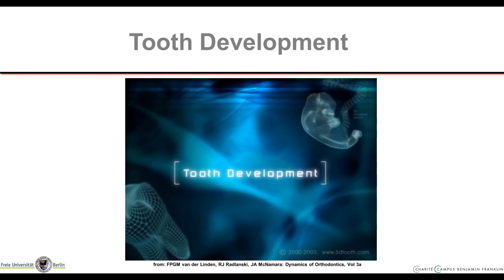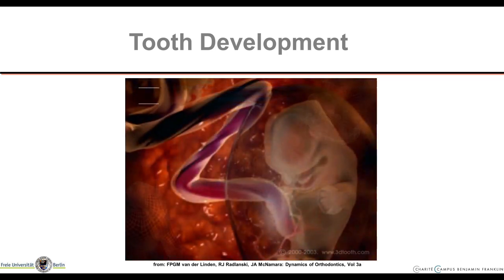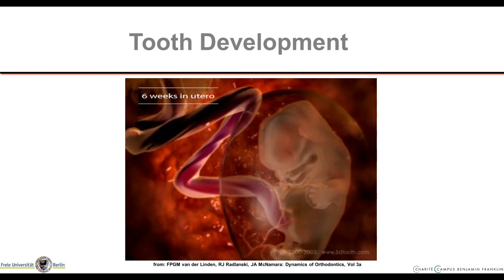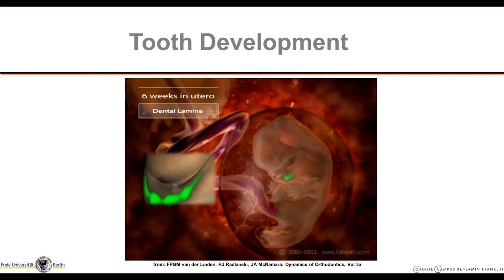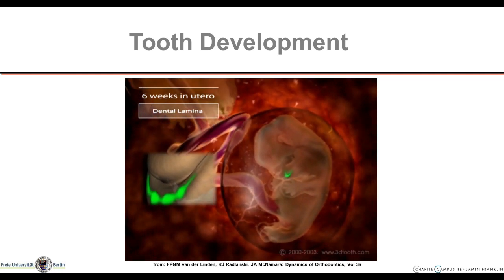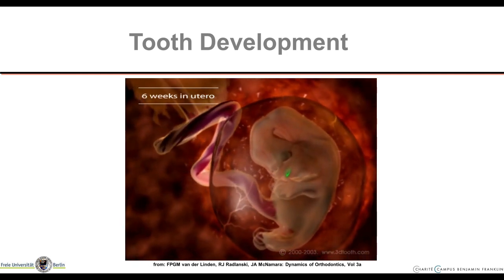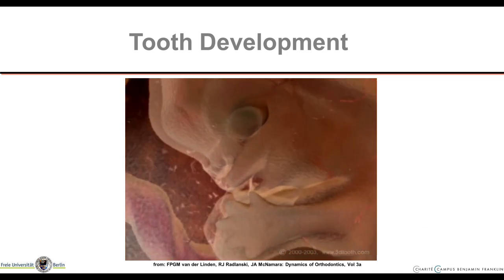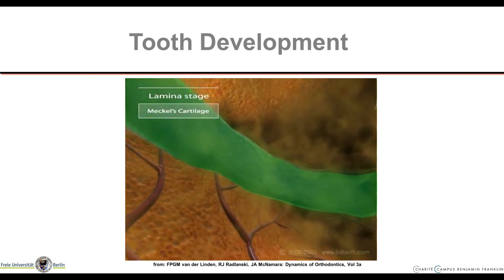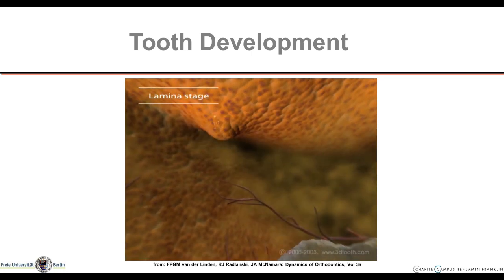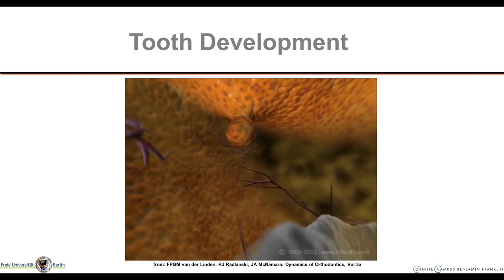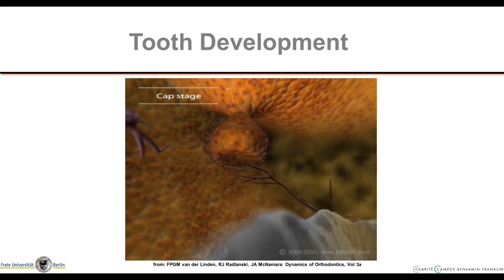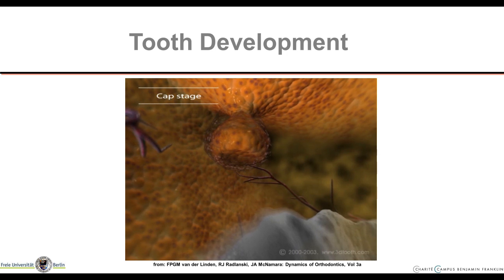Here is a computer animated movie summarizing the most important events of dental development. Here is the embryo, somewhat in motion. We make everything transparent that we are not interested in, and zoom in towards the dental lamina. It is formed already in the sixth week as a thickening of the epithelium of the oral cavity in certain regions. We zoom in further and can now see Meckel's cartilage and some blood vessels in the region. These are called the tooth buds. They change their shape quickly because the cells in the center lag behind in growth while the other cells continue to grow, and thus the primordium changes into the cap stage.